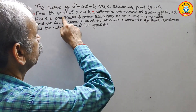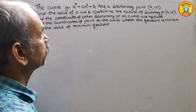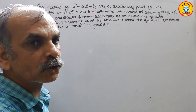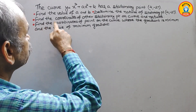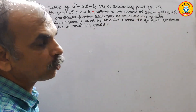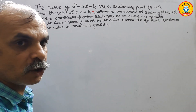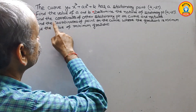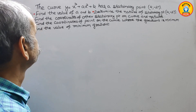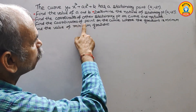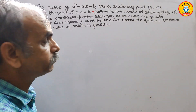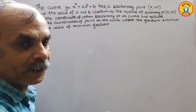The question is: the curve y equals x cubed plus ax squared plus b has a stationary point at (4, -27). Find the value of a and b. Second, determine the nature of the stationary point (4, -27). Third, find the coordinates of the other stationary point on the curve and its nature. Finally, find the coordinates of the point on the curve where the gradient is minimum, and the value of that minimum gradient.